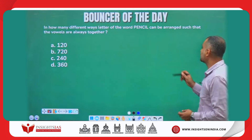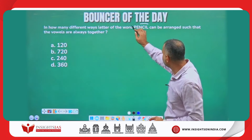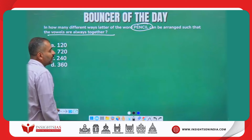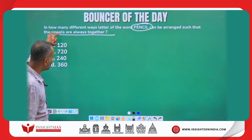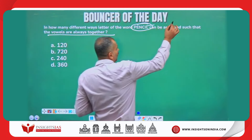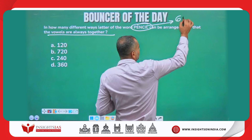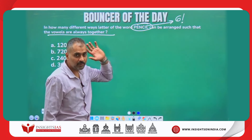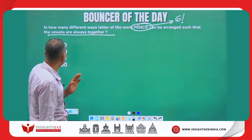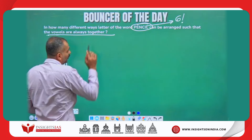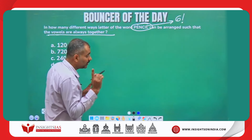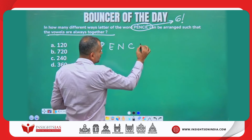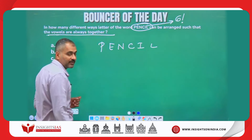In how many different ways can the letters of the word PENCIL be arranged such that the vowels must always be together? If there was no condition, the answer would simply be 6 factorial, because there are 6 different characters. 6 factorial is 720. But here, since the vowels must always be together, we approach it differently.